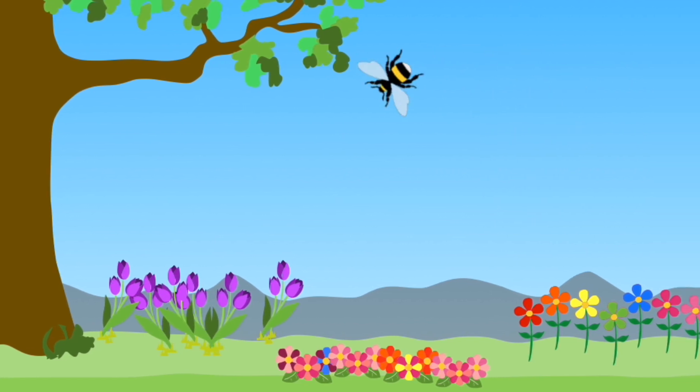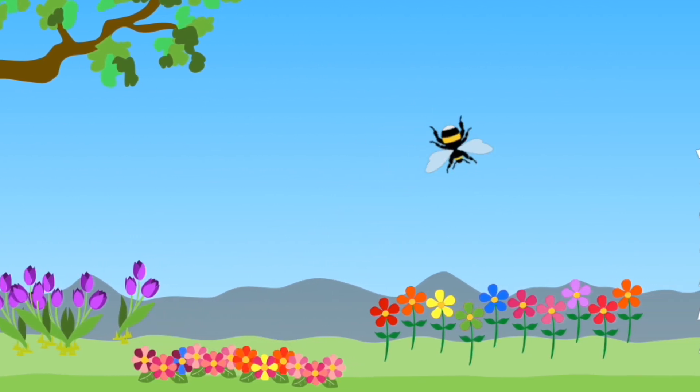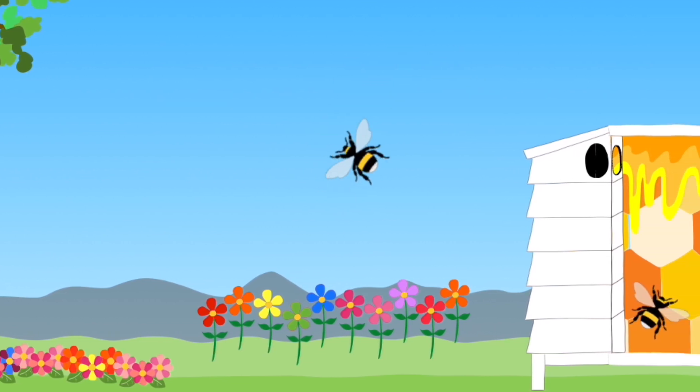Bees have two stomachs. One of those serves as a storage place for the nectar. To fill that stomach it can take up to 1,000 trips to flowers.